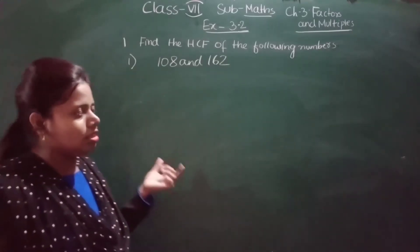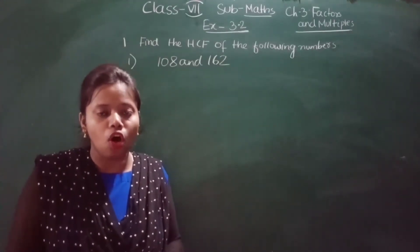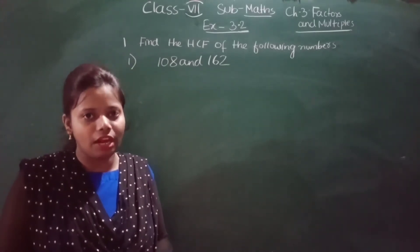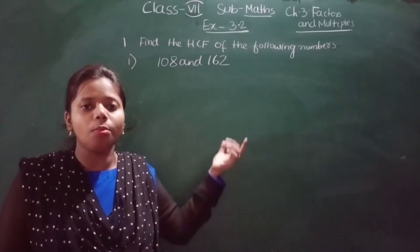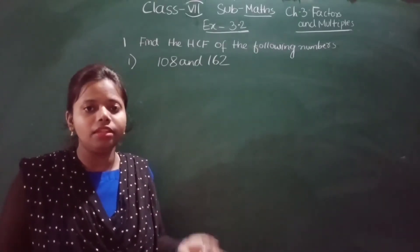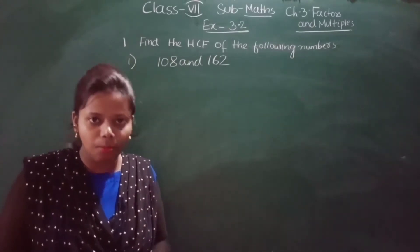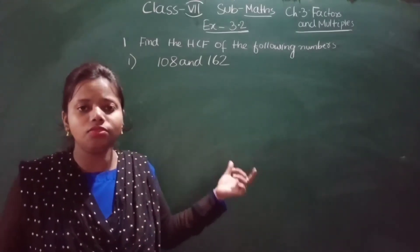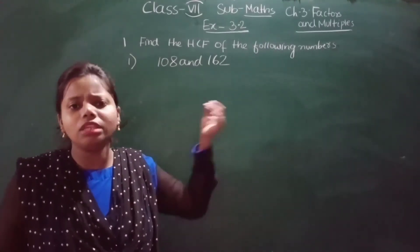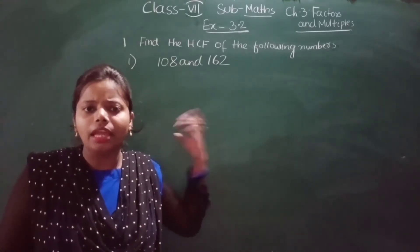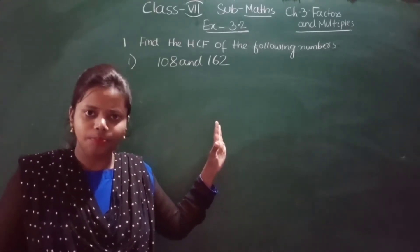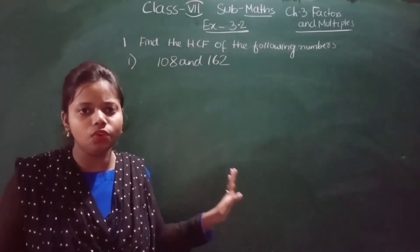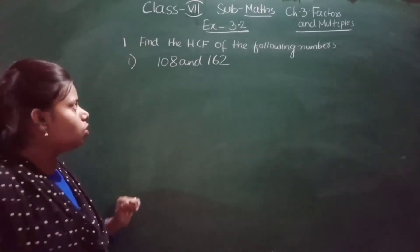Question 1 of exercise 3.2 is: find the HCF of the following numbers. HCF means Highest Common Factor. You can use any method — prime factorization method, long division method, or common division method. Here I will use the prime factorization method since we have already practiced it.